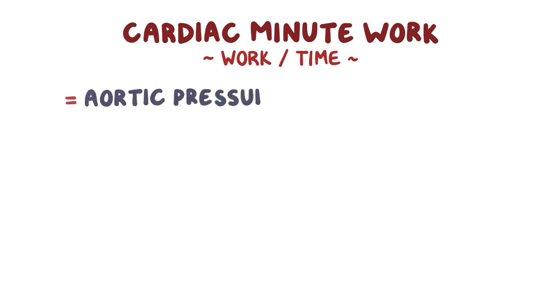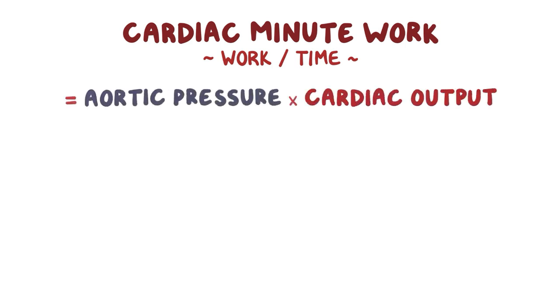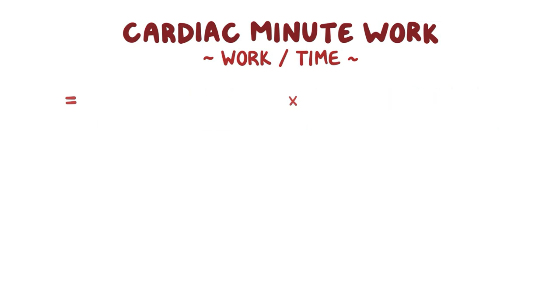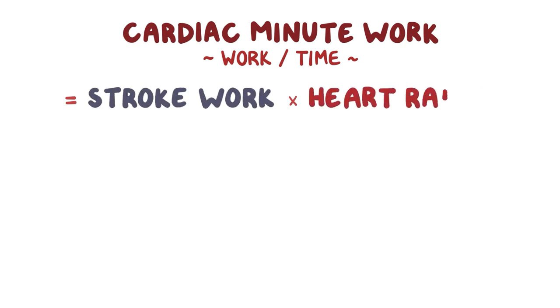In a related concept, cardiac minute work is defined as work per time, or how much work the heart muscle does over one minute. In terms of cardiac function, cardiac minute work equals mean aortic pressure times cardiac output, where cardiac output is defined as heart rate, or beats per minute, times the stroke volume. Since mean aortic pressure can be calculated as stroke work divided by stroke volume, we can substitute that into the equation and see that cardiac minute work equals stroke work times heart rate.